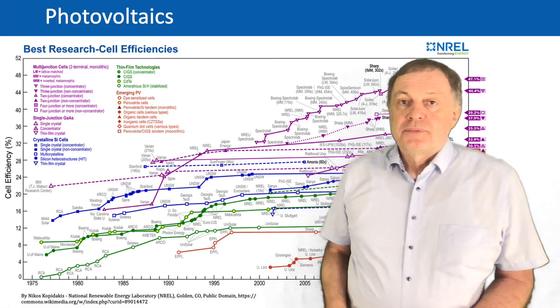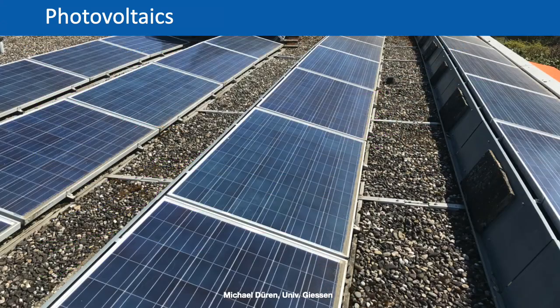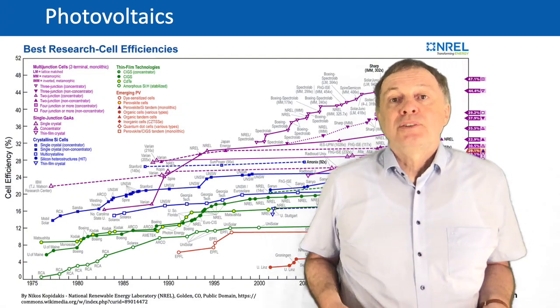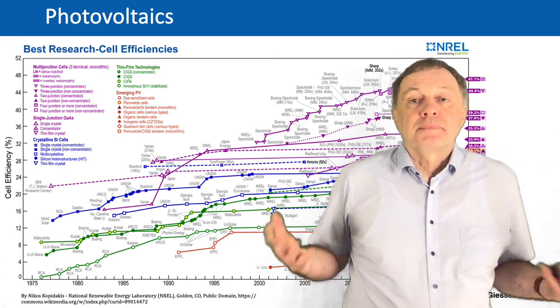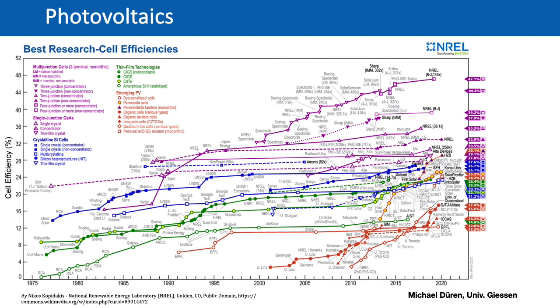Most solar cells have to be made using semiconductor technology, which means you need very clean rooms — it's a rather complicated technology. However, there is a development of new solar cells, especially organic solar cells, which are much simpler to produce. Some of them you can even use like a paint — you paint a substrate and your substrate becomes a photovoltaic cell using this paint as active material. So there's a lot of development and hope for the future to improve that even more.